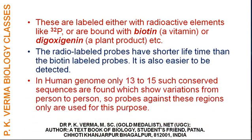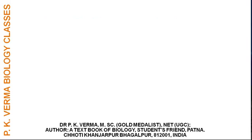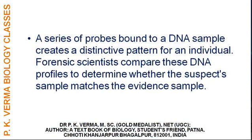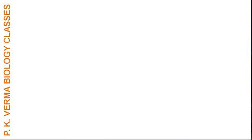In the human genome, only 13 to 15 such unique sequences are found which show variations from person to person, so probes against these regions only are used for this purpose. The FBI uses only 13 regions. A series of probes bound to a DNA sample creates a distinctive pattern for an individual. Forensic scientists compare these DNA profiles to determine whether the suspect sample matches the evidence sample.